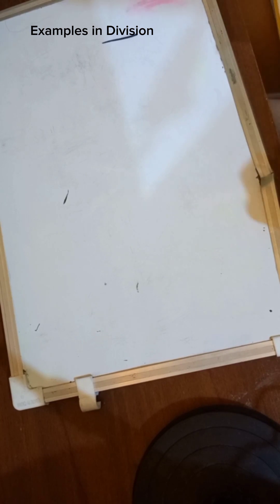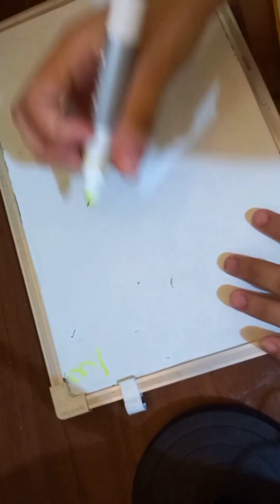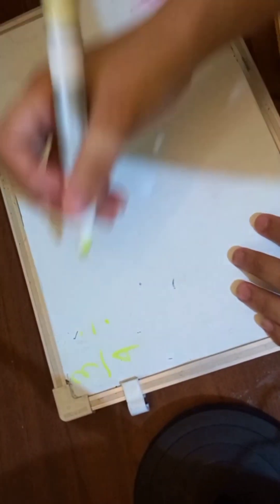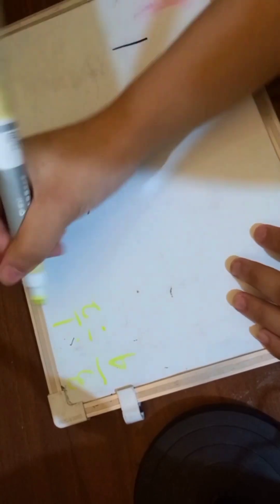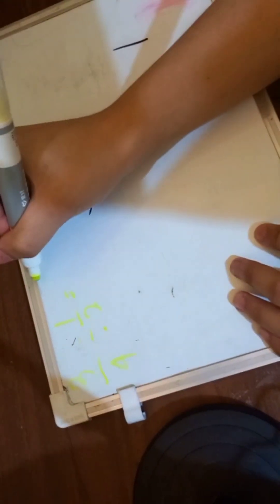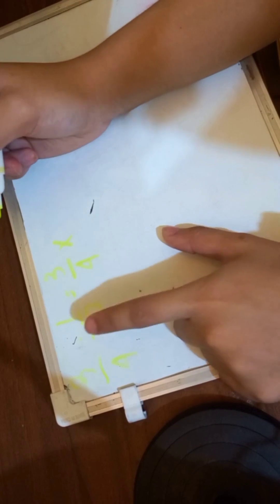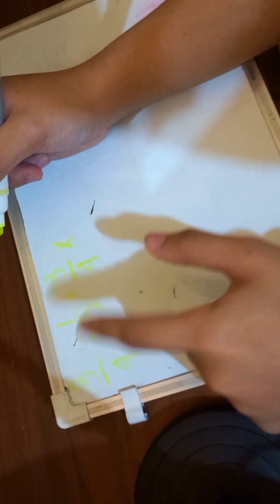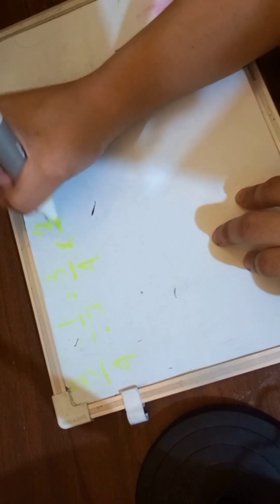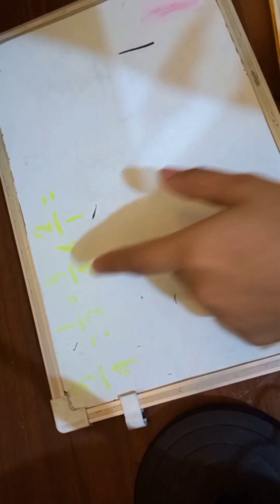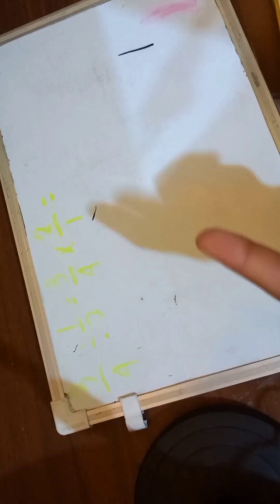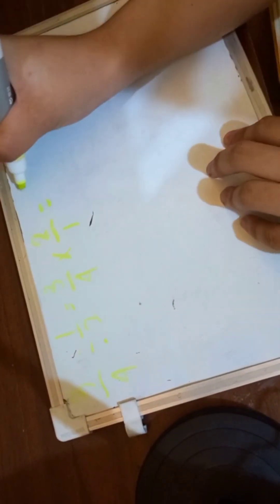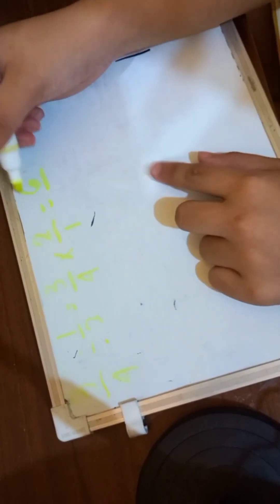Now we're going to do division. In division, example 1 is 3 over 4 divided by 1 half. What we're going to do is copy the first one, change the division sign into multiplication, and get the reciprocal of 1 half. So it's going to be 2 over 1 — we just flip it. Then we proceed to multiplication: 3 times 2 is 6, and 4 times 1 is 4.